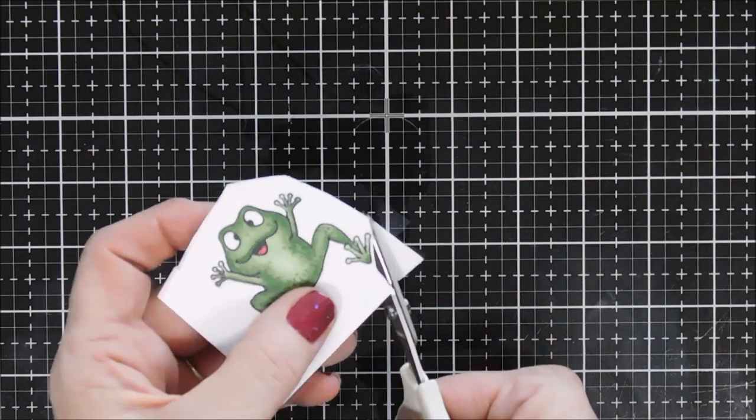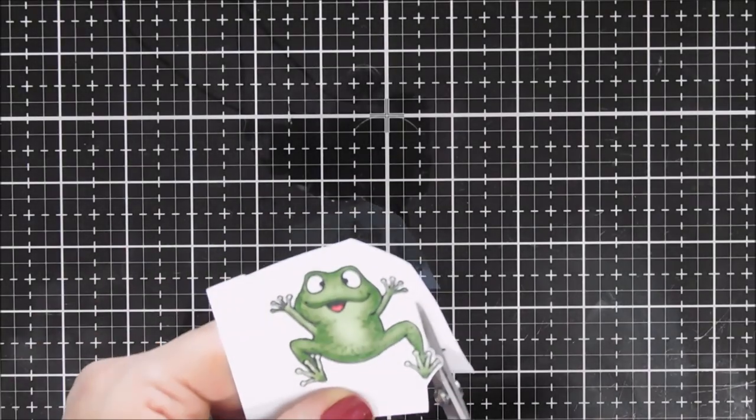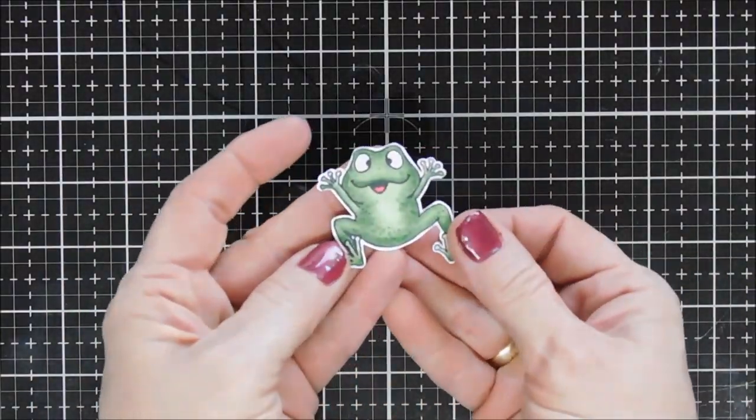I'm gonna fussy cut him out and I'm going to leave a little bit of a white border. His little toes and fingers, well I don't know if froggies have toes or fingers, little suction thingies that were really small to cut out so I left a little bit of a white border and there he is.